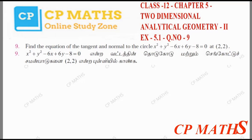Hello guys, I am CP. I am going to talk about Class 12 standard Chapter 5, Two Dimensional Analytical Geometry. In Exercise 5.1, we will talk about question number 9 — find the equation of the tangent and normal.